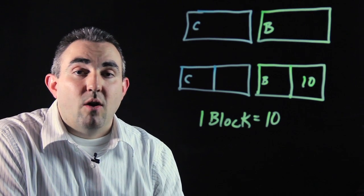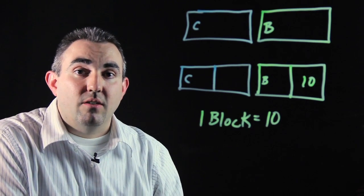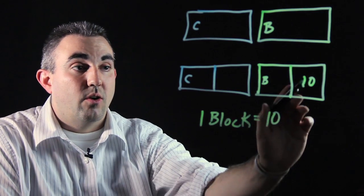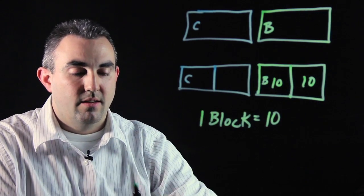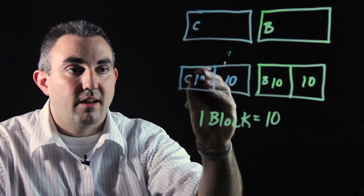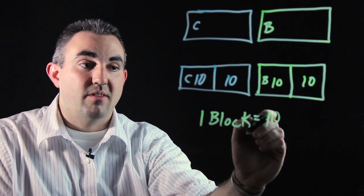Now, we want to know how many pastries the mother made in all. So we have four different blocks here, ten brownies, ten brownies, ten cupcakes, ten cupcakes, since each block represents ten.